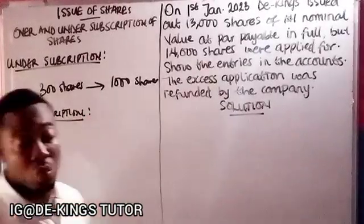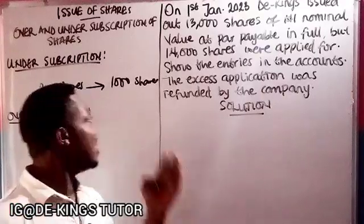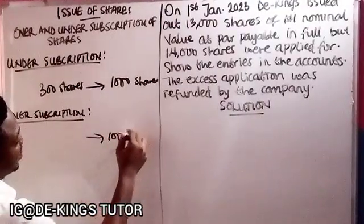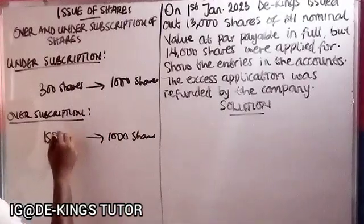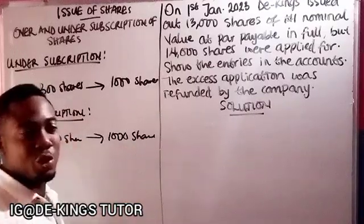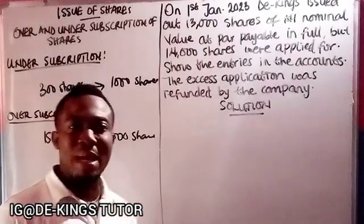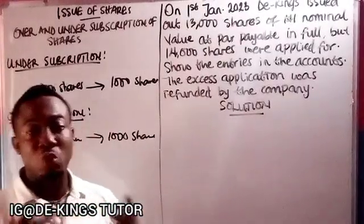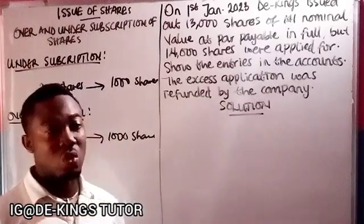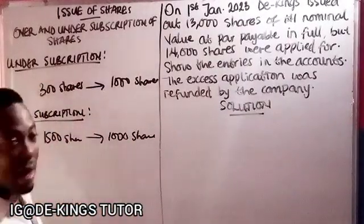Over subscription refers to a situation whereby those who applied for shares exceed what was issued — it is the opposite of under subscription. For instance, if 1,000 shares are issued but 1,500 are applied for, this is over subscription. In the event of over subscription, the excess application money must be refunded back to the unsuccessful applicants.